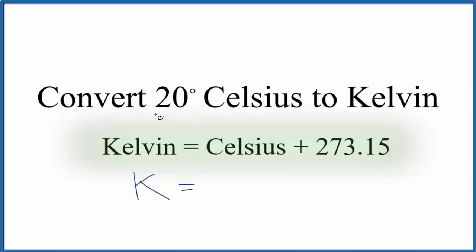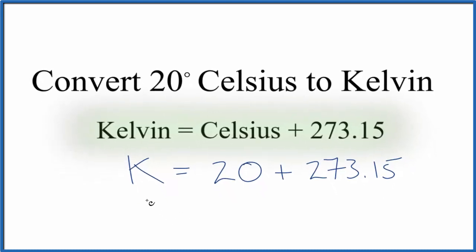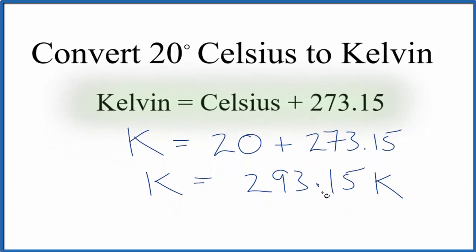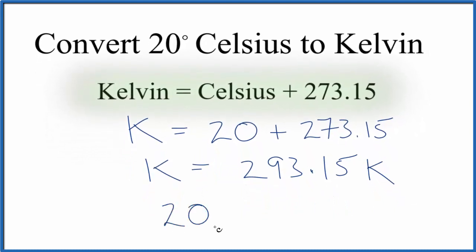So K equals 20 degrees Celsius plus 273.15. We add these numbers together and get 293.15 K. So we could say 20 degrees Celsius equals 293.15 Kelvin.